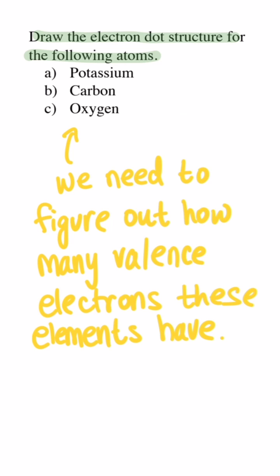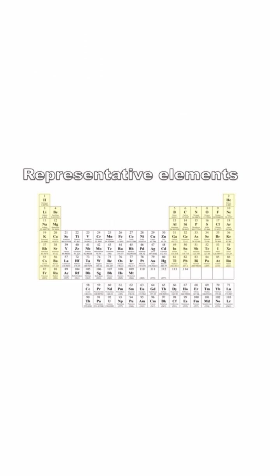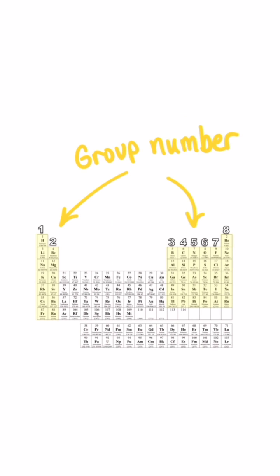To solve this problem we need to figure out how many valence electrons each of these atoms has. To find the number of valence electrons for a representative element, you just look for its group number. That's the number of valence electrons.